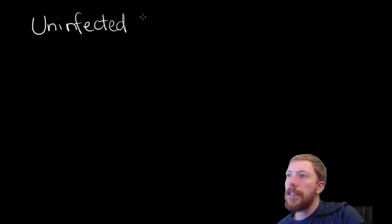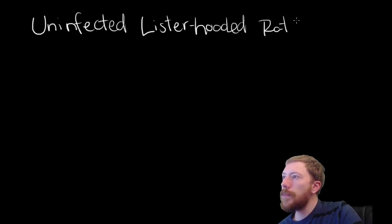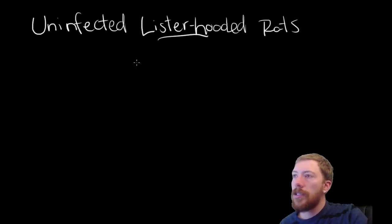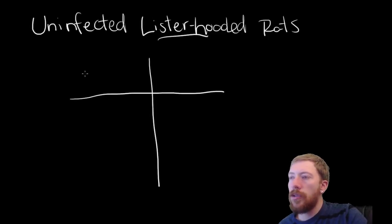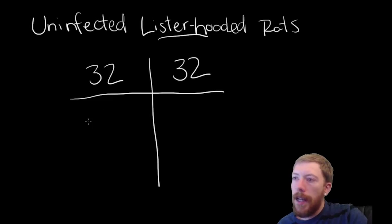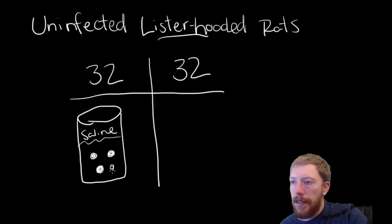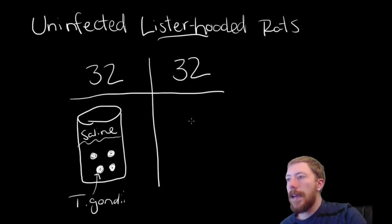So, what did the authors actually do? So, they begin by taking uninfected lister-hooded rats. And they use this particular strain, these lister-hooded rats, because they have behaviors that are very similar to a natural population of rats. So, they take these rats and they divide them up into two groups of 32 rats each. And in the first group, they inoculate the rats with a saline solution that contains these cysts. So, they contain the actual T. gondii parasites. So, basically, in this group, they infect the rats with T. gondii.